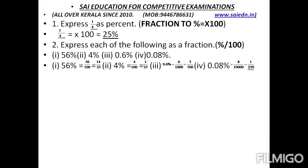0.6% means we take 0.6 divided by 100. Since there is one decimal place, we multiply by 10, giving us 6 divided by 1000, which equals 3 by 500. For 0.08%, there are two decimal places, so we get 8 divided by 10,000, which simplifies to 1 by 1,250.